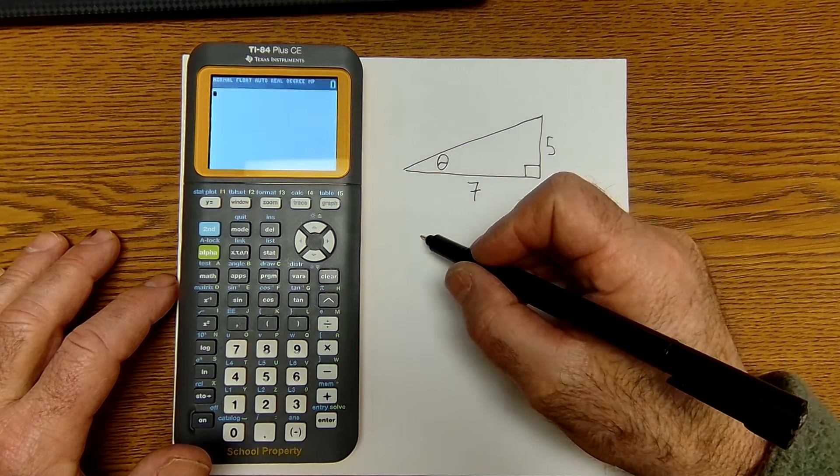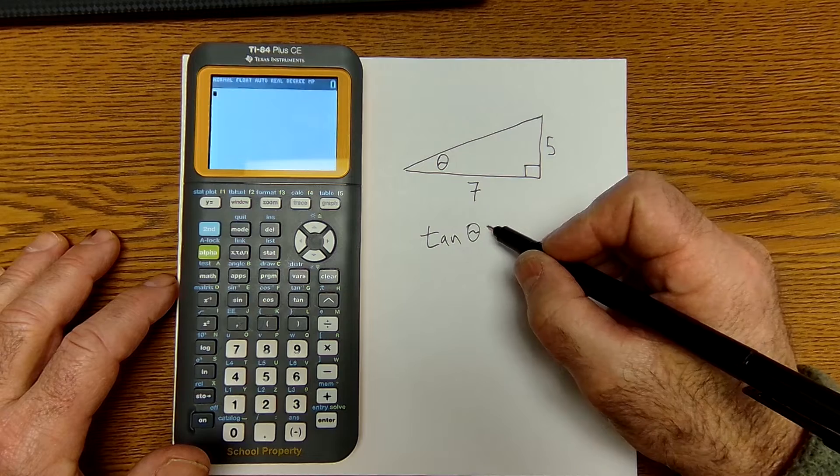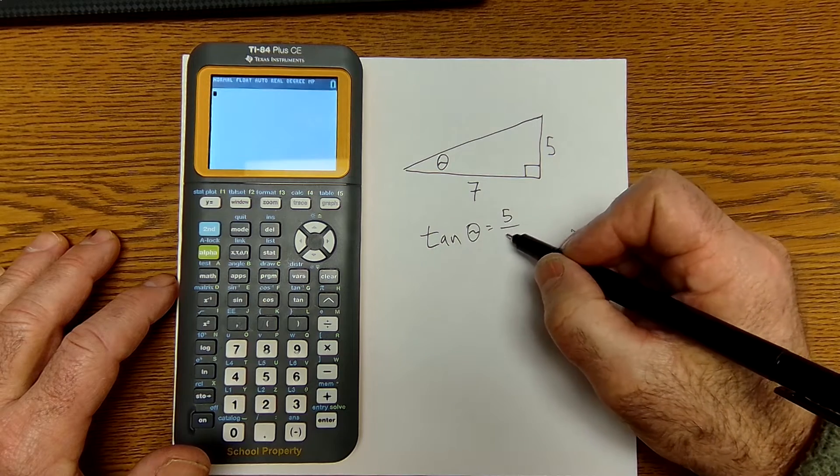I have the opposite adjacent. I'm going to use a trig function tangent. Tangent of theta is equal to the opposite side over the adjacent side.